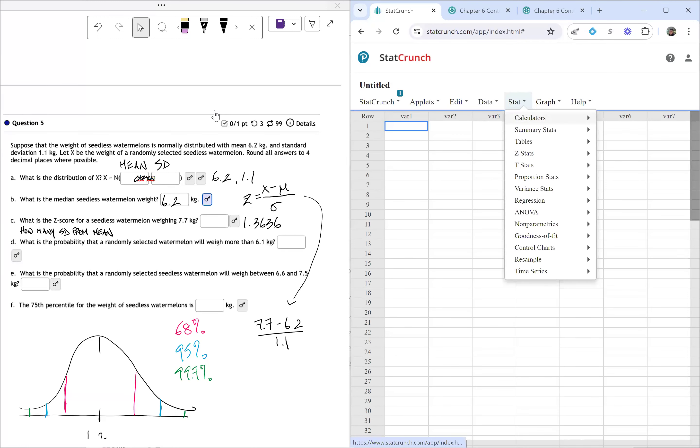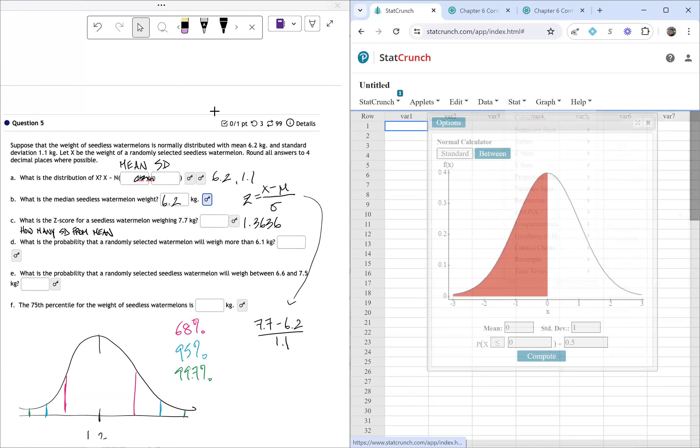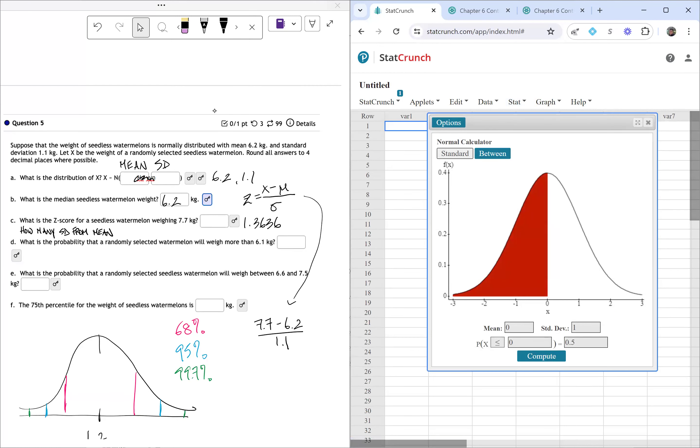Let's try this again. Stat, calculator, then we're going to go to normal distribution. Now, part D says, what is the probability that a randomly selected watermelon will weigh more than 6.1? So it's not a between, but it's just the standard one. I'm going to type in my mean, my mean is 6.2, my standard deviation is 1.1, and I want to see when it's going to be more than, not zero, but more than 6.1 kilograms.